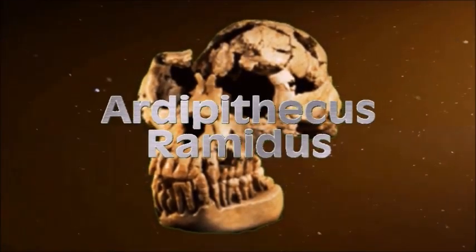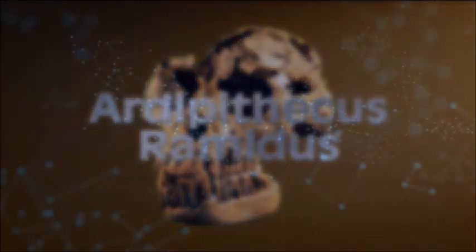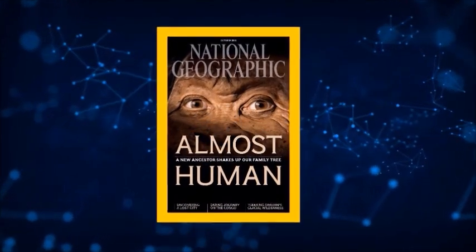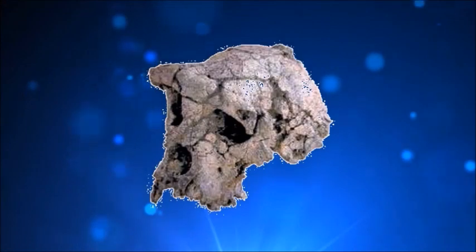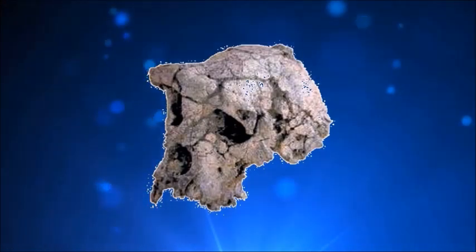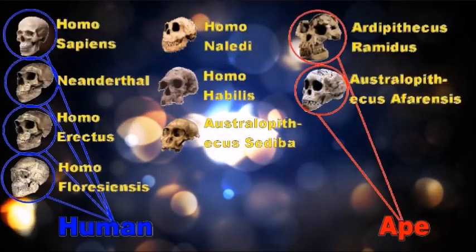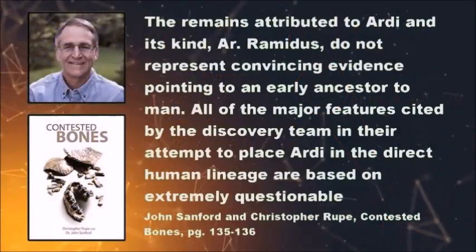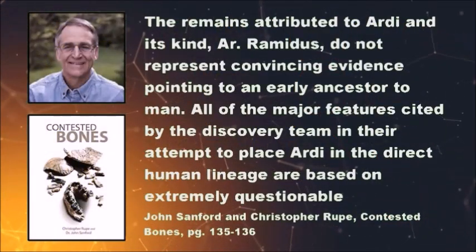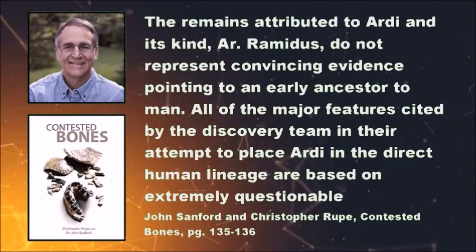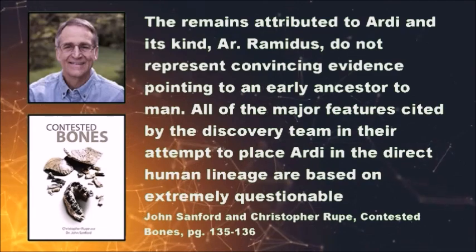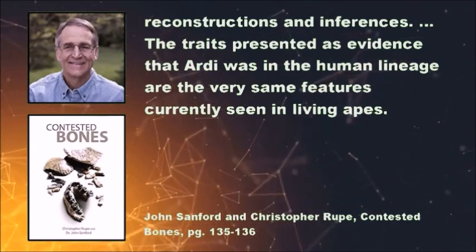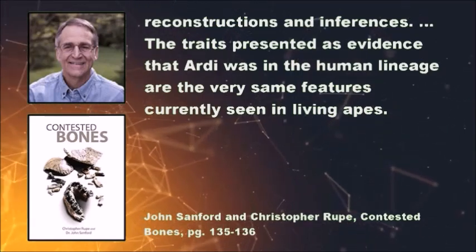Ardipithecus remetus is supposed to link apes to humans, however the basic problem is that we have absolutely no idea what Ardipithecus even looked like. The bones were so poorly preserved and badly crushed that they literally crumbled when touched. Ardipithecus took over 20 years to reconstruct, and most of the reconstruction was guesswork based on the assumption of common ancestry. John Sanford and Christopher Rupp say: 'The remains attributed to Ardipithecus do not represent convincing evidence pointing to an early ancestor to man. All of the major features cited are based on extremely questionable reconstructions and inferences. The traits presented as evidence that Ardipithecus was in the human lineage are the very same features currently seen in living apes.'